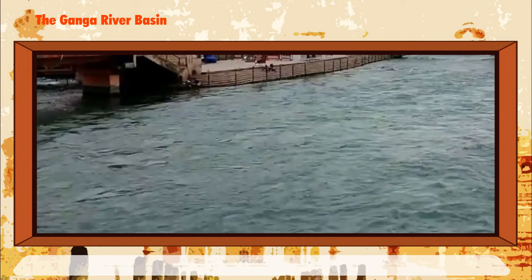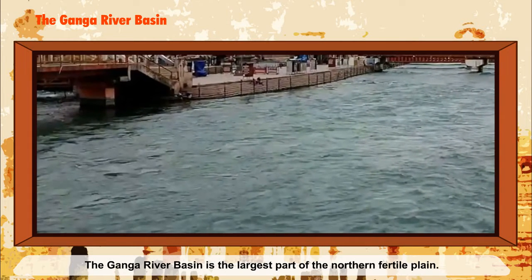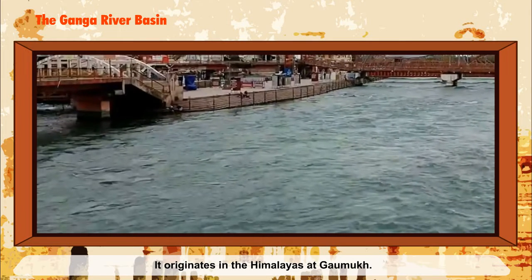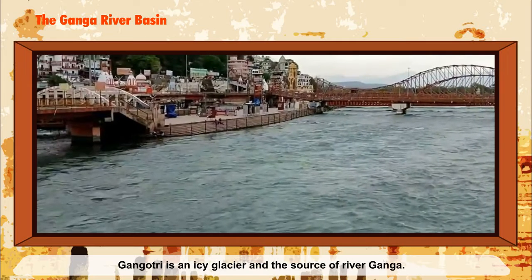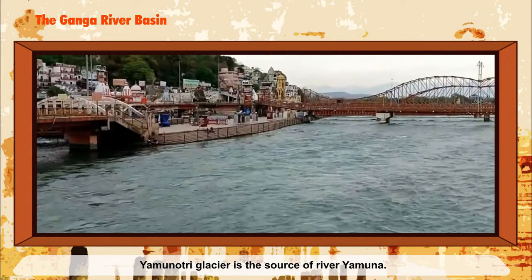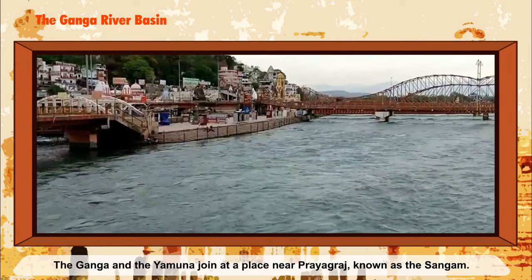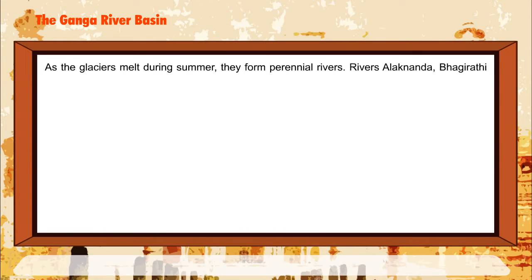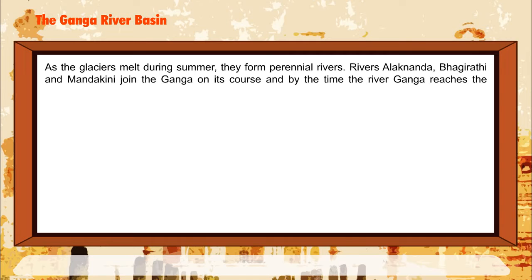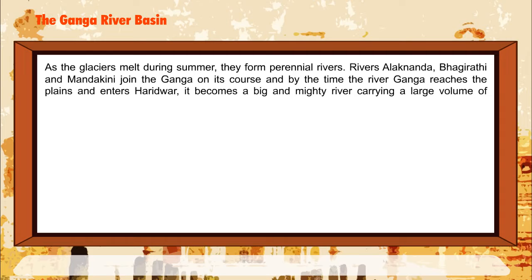The Ganga River Basin is the largest part of the Northern Fertile Plain. The Ganga originates in the Himalayas at Gomukh. Gangotri Glacier is the source of River Ganga, and Yamunotri Glacier is the source of River Yamuna. The Ganga and Yamuna join near Prayagraj at a place known as the Sangam. As the glaciers melt during summer, they form perennial rivers. Rivers Alaknanda, Bhagirathi, and Mandakini join the Ganga on its course, and by the time River Ganga reaches the plains and enters Haridwar, it becomes a big and mighty river carrying a large volume of water.